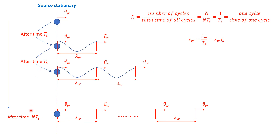After n periods, many wavefronts have propagated outward. The frequency of the source is the number of cycles over the total time: n divided by nTs. The time for one cycle is Ts, so frequency equals 1 over Ts — that is, one cycle over the period of the source.